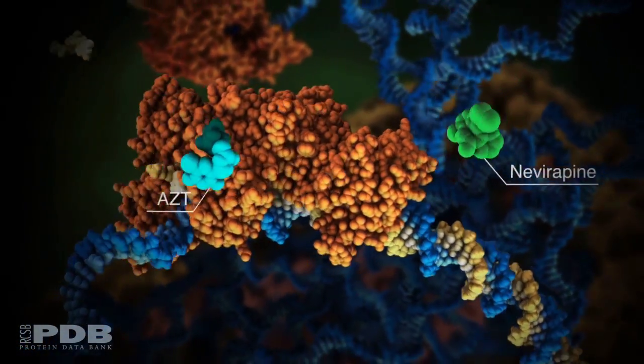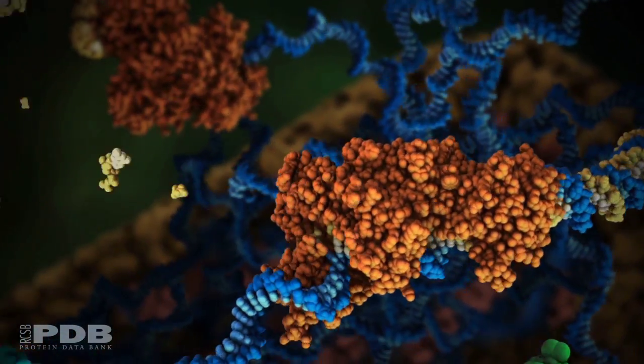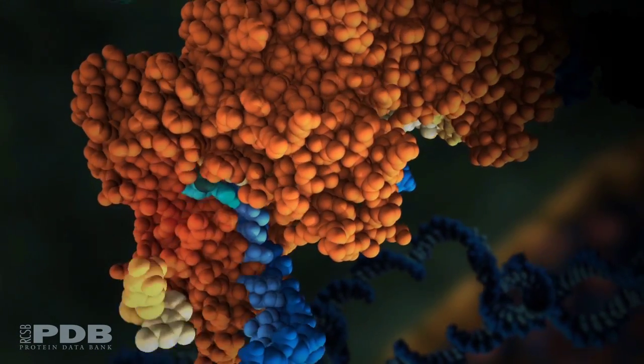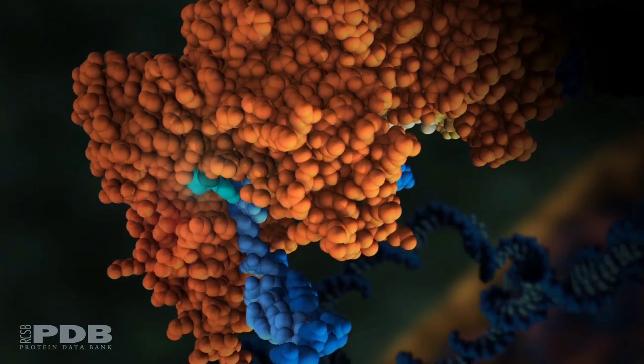Two types of drugs block reverse transcriptase. Drugs like AZT mimic the normal building blocks of DNA, but prematurely terminate the DNA chain.